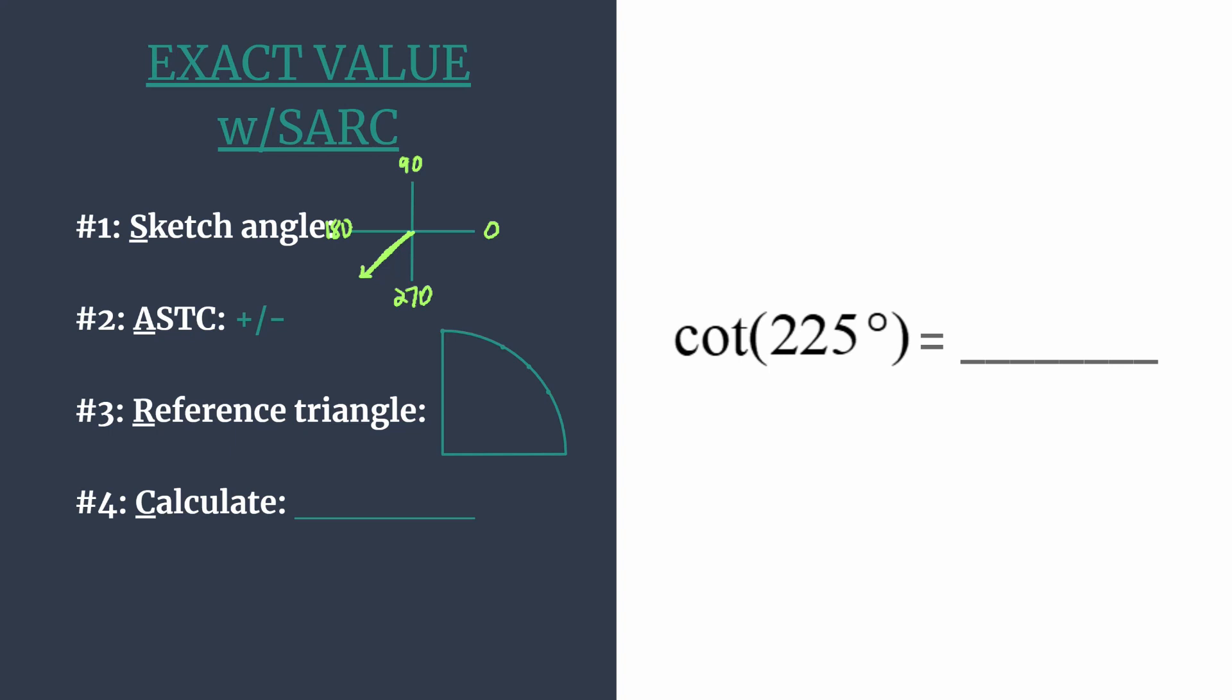Now that we know our angle's in the third quadrant, we're ready to find out if our final answer is going to be positive or negative using ASTC. Think all students take classes and you just work your way around starting in quadrant one, and that tells you which trig functions are positive in each of these quadrants. So they're all positive in the first.